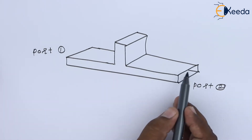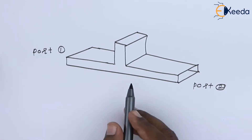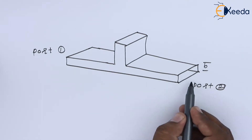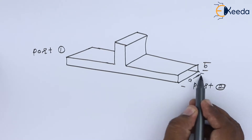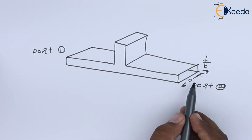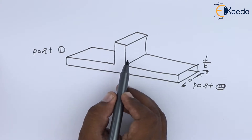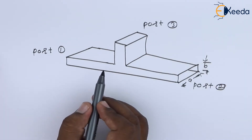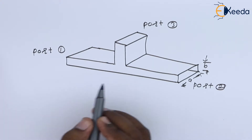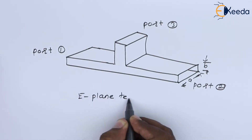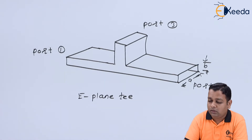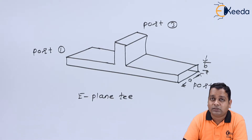When we have a junction to the broader side of the rectangular cross section — the rectangular cross section is designated with two dimensions: the smaller dimension called the width, denoted by small b, and the broader dimension denoted by small a — when we attach a junction and output port to the broader dimension a, and name it port number three, such a waveguide hybrid circuitry is called an E-Plane T. We shall address why it is named E-Plane T and analyze the behavior of power at ports one, two, and three when we derive the scattering matrix for this device.